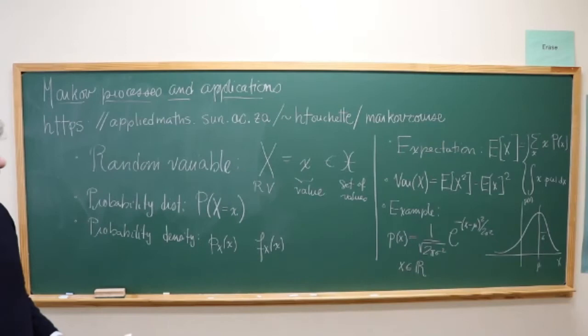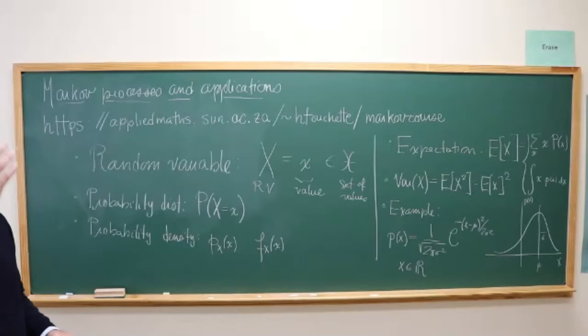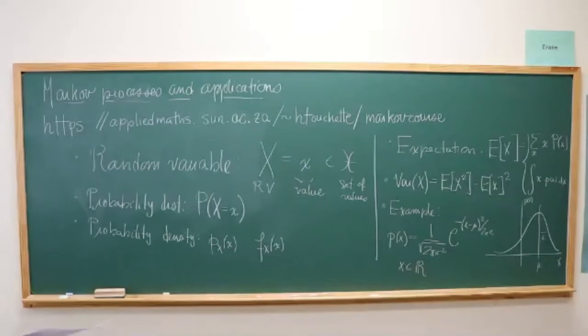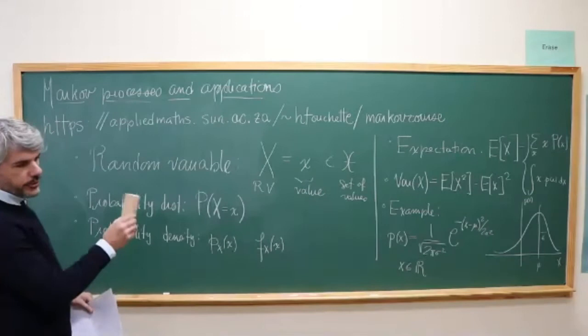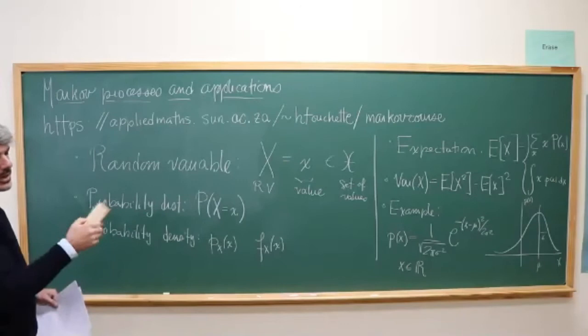This is all the notation I want to start with. I'll introduce more notation as we go along, but I don't want to do a full recap of probability theory. Have a look at chapter one in the lecture notes for the full recap of what you'd need in terms of probability theory to follow the course. The key notions we need are random variables, distributions, and so on.